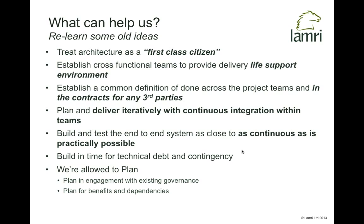Planning is not anathema to an agile project. We can plan engagement with existing governance, and work out how we're going to do this. We can plan for benefits and dependencies — when are we actually going to deliver particular benefits, and at which point do dependencies become critical and lock in? This will change over time as we become more experienced. But there's nothing wrong with having, relatively early in the project, a vision of when key features are delivered and when key dependencies lock together to enable those features.